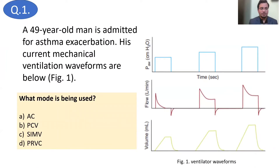A 49-year-old man is admitted for asthma exacerbation. His current mechanical ventilation waveforms are shown below. What mode is being used? Options: A) Assist control, B) pressure control ventilation, C) SIMV, or D) PRVC — that is, pressure regulated volume control.